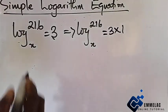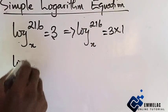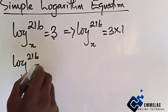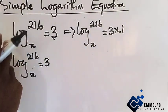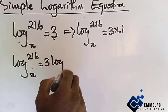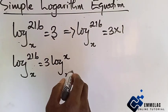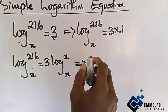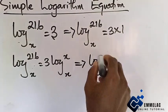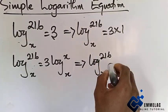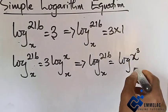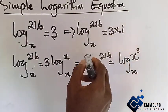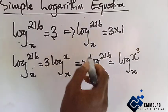So here we have log 216 base x equals 3. Now using this to reconcile, we have log x base x, which further implies that log 216 base x equals log x³ base x.